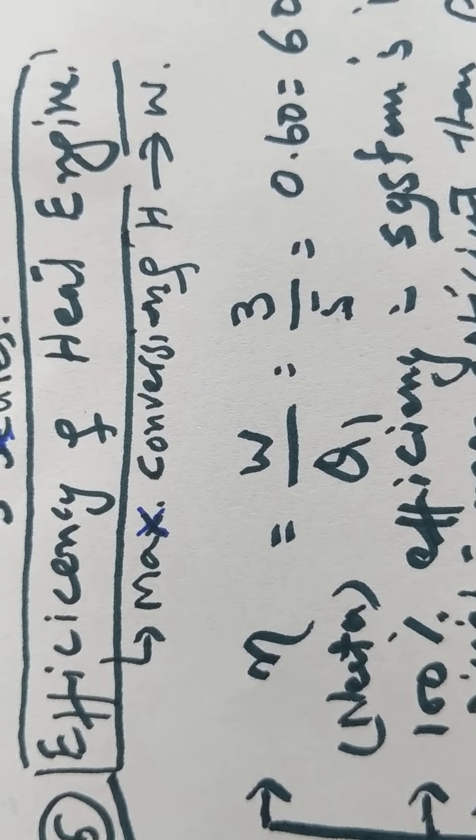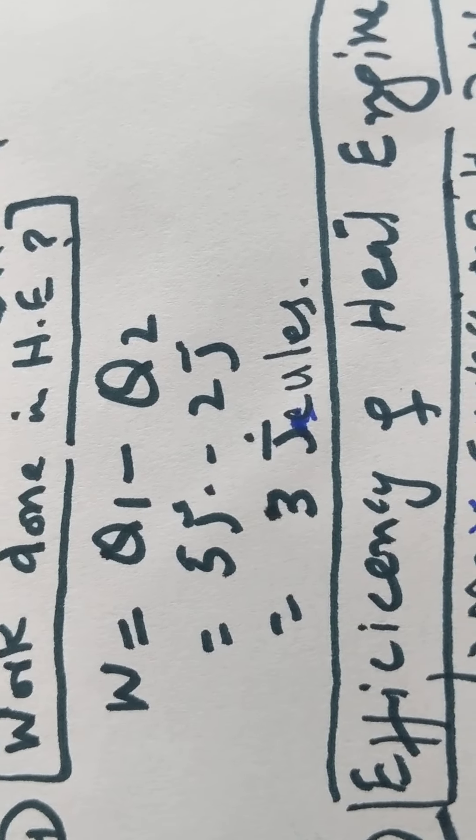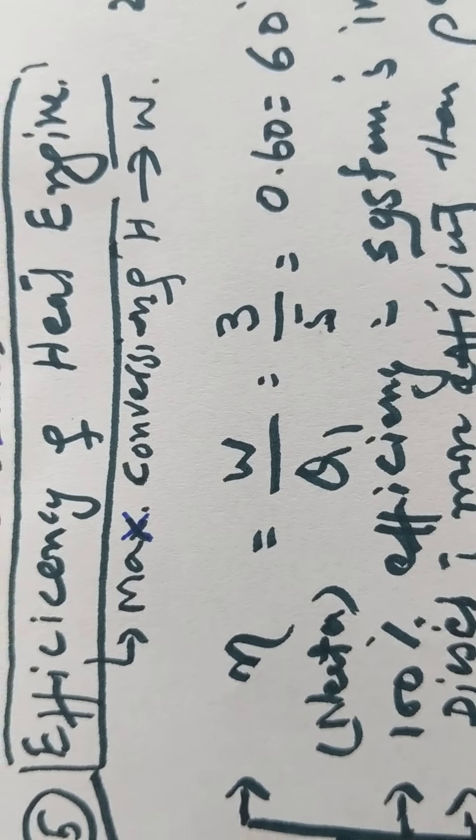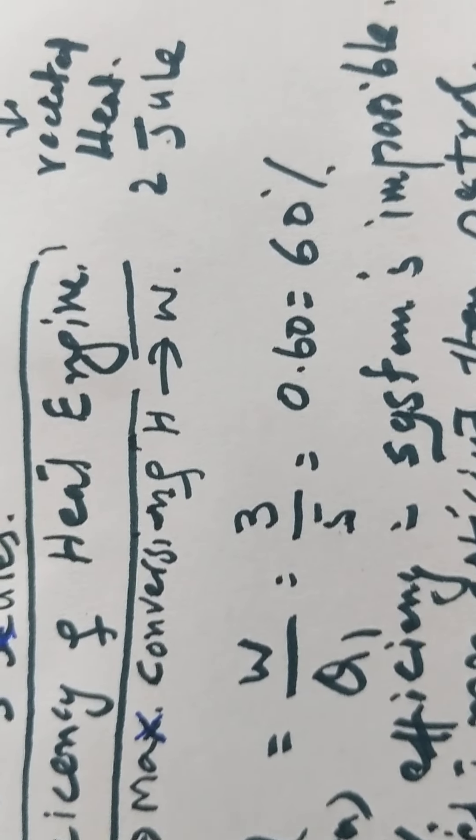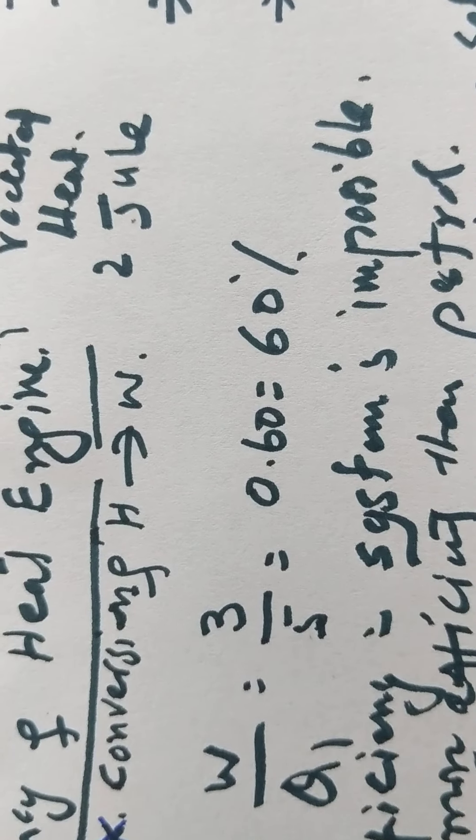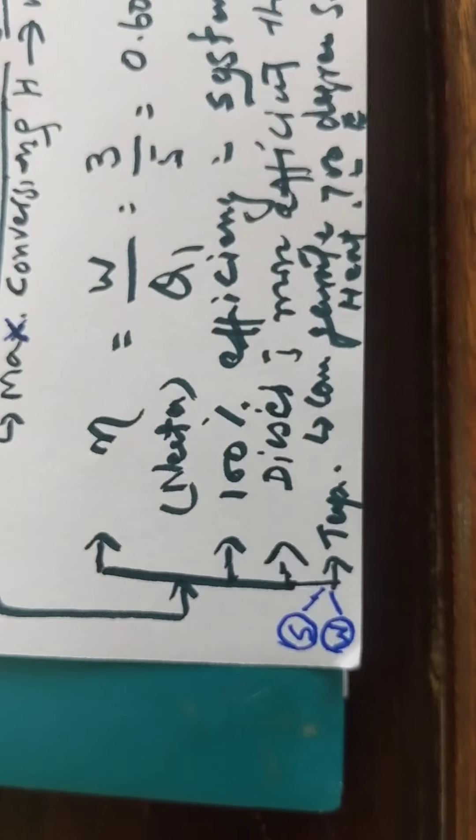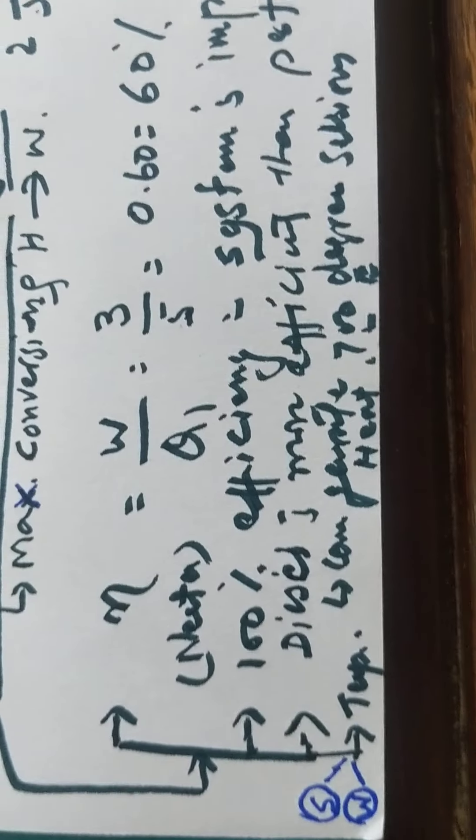Where W is work done - as we calculated, it's 3 joules - and Q1 is the energy supplied to the system, which is 5 joules. So η = 3/5 = 0.60 or 60 percent. Note that 100 percent efficiency is impossible.